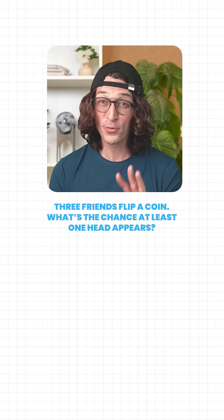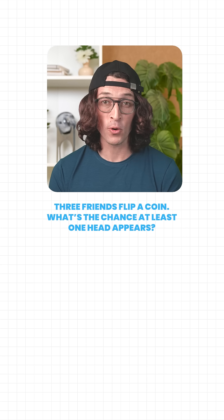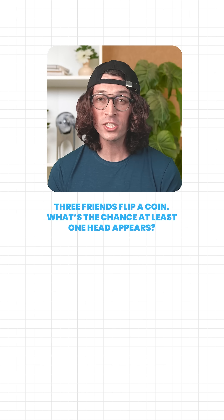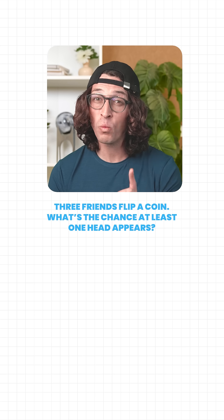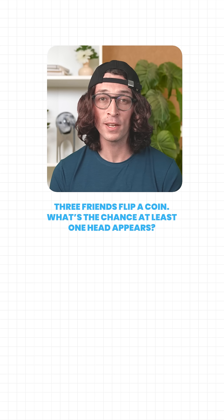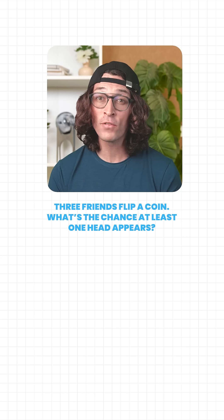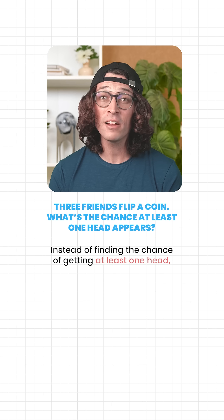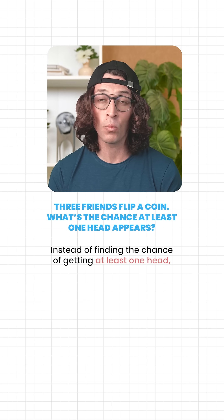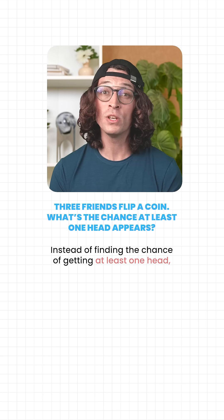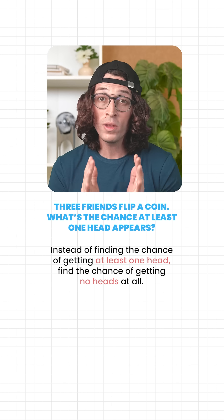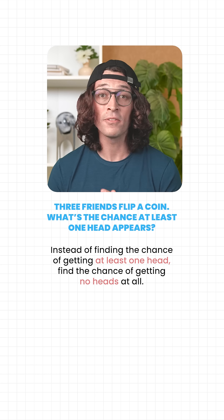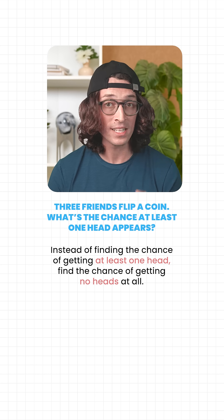For example, three friends flip a coin. What's the chance at least one head appears? First, instead of finding the chance of getting at least one head, we do the opposite — we find the chance of getting no heads at all.